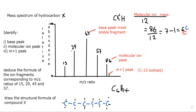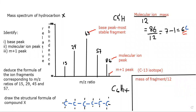Now, how do we get these fragments? It will be similar to calculating the molecular ion with a small exception. When I want the mass of a fragment, just divide it by 12. Let's start with our base peak: 43 divided by 12 gives 3.6.